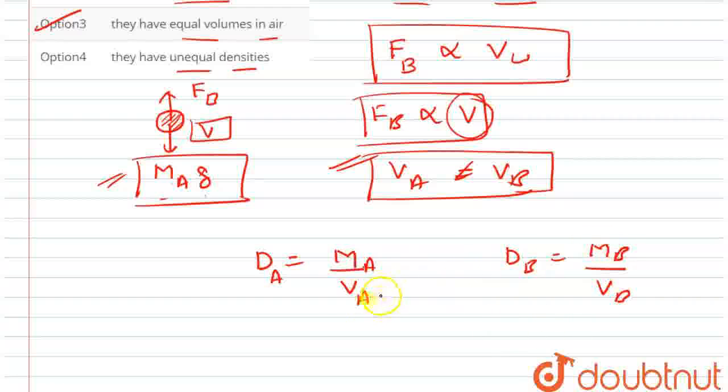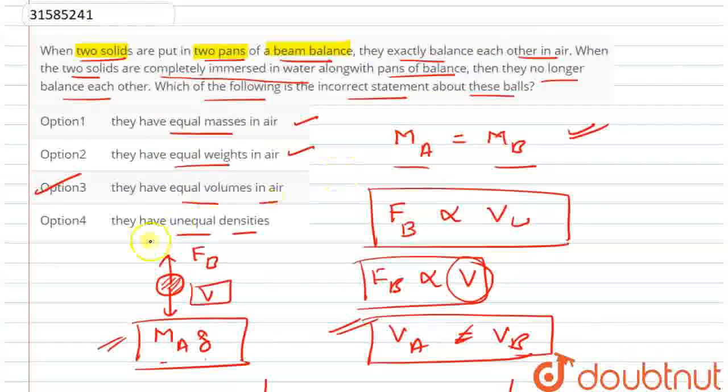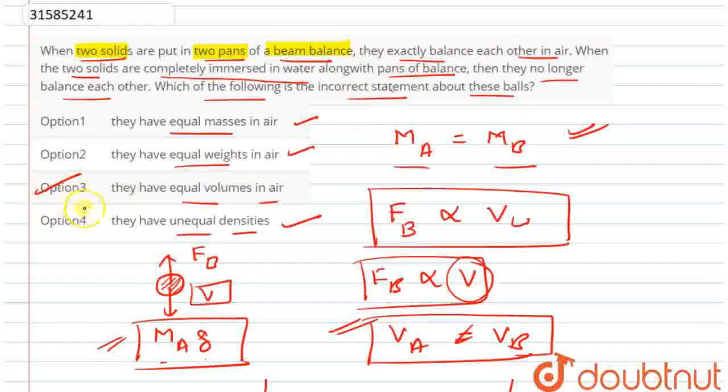Mass of A equals mass of B. The numerator is the same but denominator is different. So obviously this value is different. Clearly, density of A is not equal to density of B. So densities should not be equal. They have unequal densities. This is correct. We had to find incorrect. I hope this question is clear to everyone.